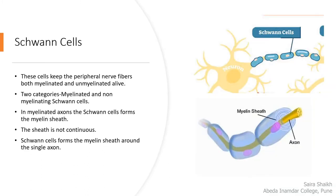The next glia cell is the Schwann cell. It is of two types: myelinated Schwann cell and non-myelinated Schwann cells. The myelinated Schwann cell gives a secretion which forms the myelin sheath around the axon. In the figure, the yellow color branch is the axon; around that, the myelin sheath is present, which is formed by the Schwann cells shown in purple. The myelin sheath is not a continuous sheath — it is interrupted at certain places.